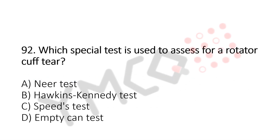Which special test is used to assess for a rotator cuff tear? Option A: Neer test. Option B: Hawkins-Kennedy test. Option C: Speed test. Option D: Empty Can test. And the answer is option D, Empty Can test. Now let us move to question number 93.